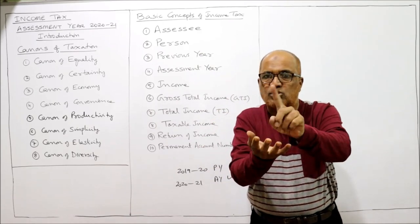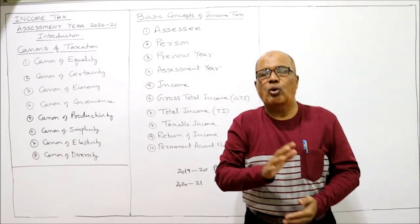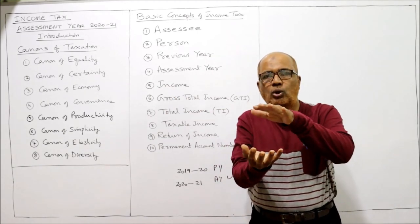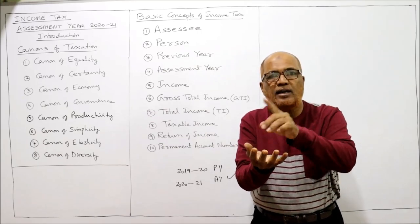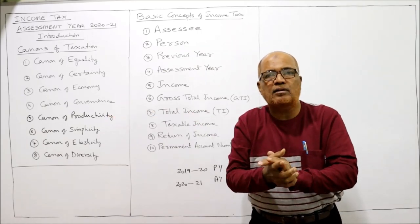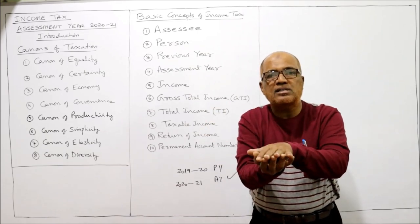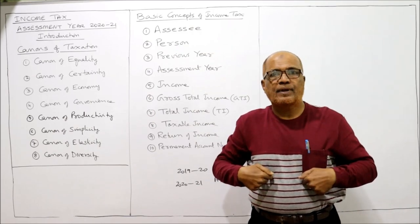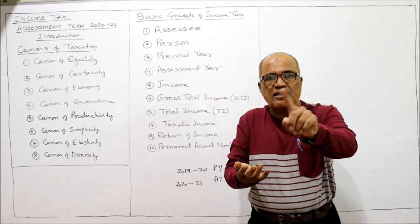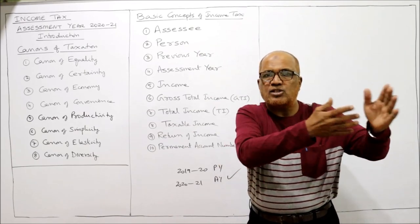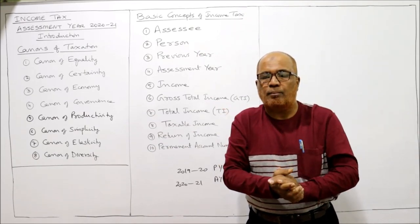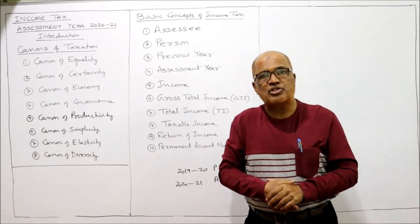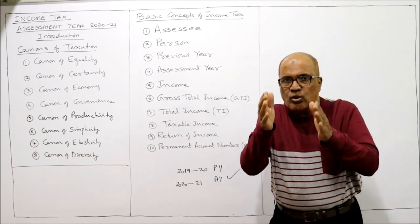The assessee has to prove that a receipt is not income. For example, a loan of 10,000 rupees is a receipt but not an income — it is a liability that must be repaid, so there is no tax on it. Whereas salary is both a receipt and income. The assessee has to prove a receipt is not income for it to be excluded from tax. Courts have given different judgments on incomes, and by referring to those judgments we can determine whether something is income or not.